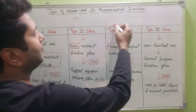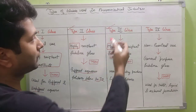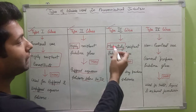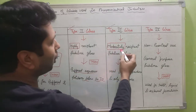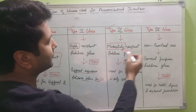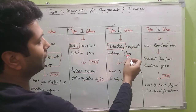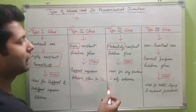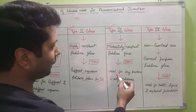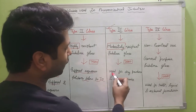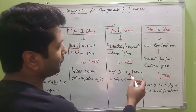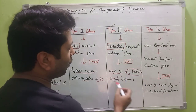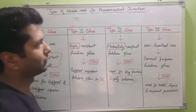Next is Type 3 glass. Type 3 glass are moderately resistant soda lime glass, and are mainly used for the storage of dry powders and oily solutions.